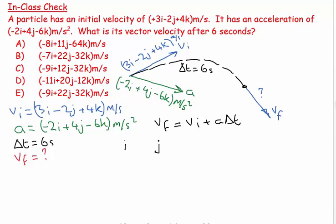I need a way of adding these things up and I prefer at this point to have a grid system. So I'm going to put IJK down, I'm going to make myself a little box, and I have my Vi is plus 3, minus 2, plus 4.